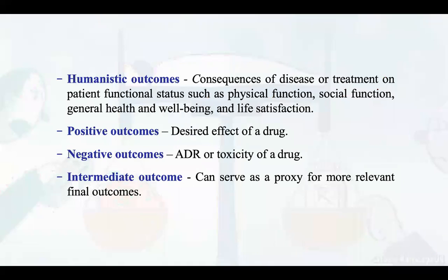Humanistic outcomes refer to the consequences of disease or treatment on patient functional status, such as physical function, social function, general health and well-being, and life satisfaction. Positive outcomes are the desired effects of a drug; negative outcomes include adverse drug reactions and toxicity. Intermediate outcomes can serve as a proxy for more relevant final outcomes.